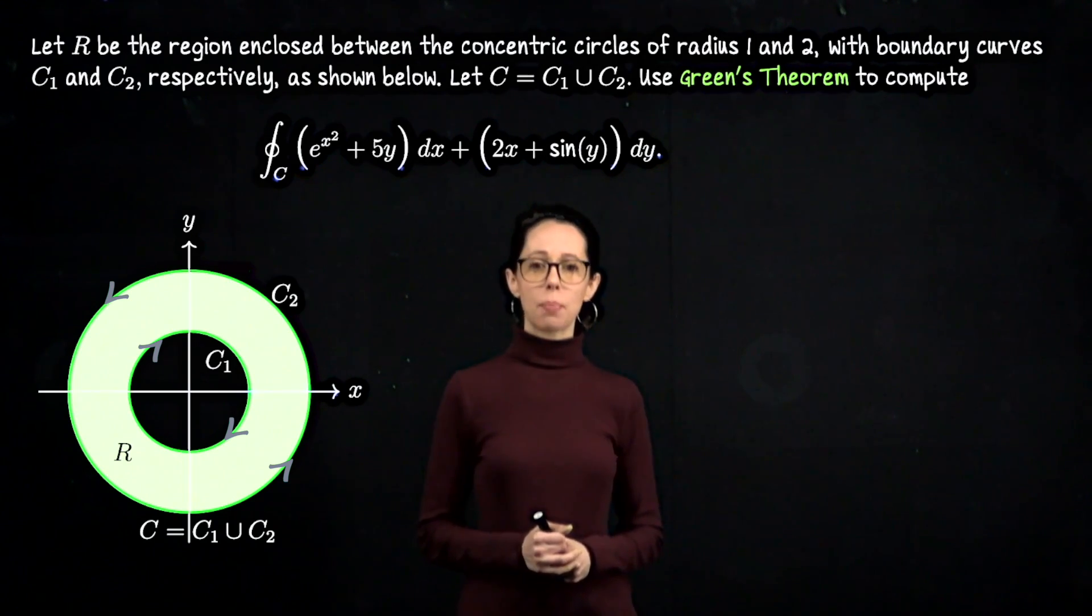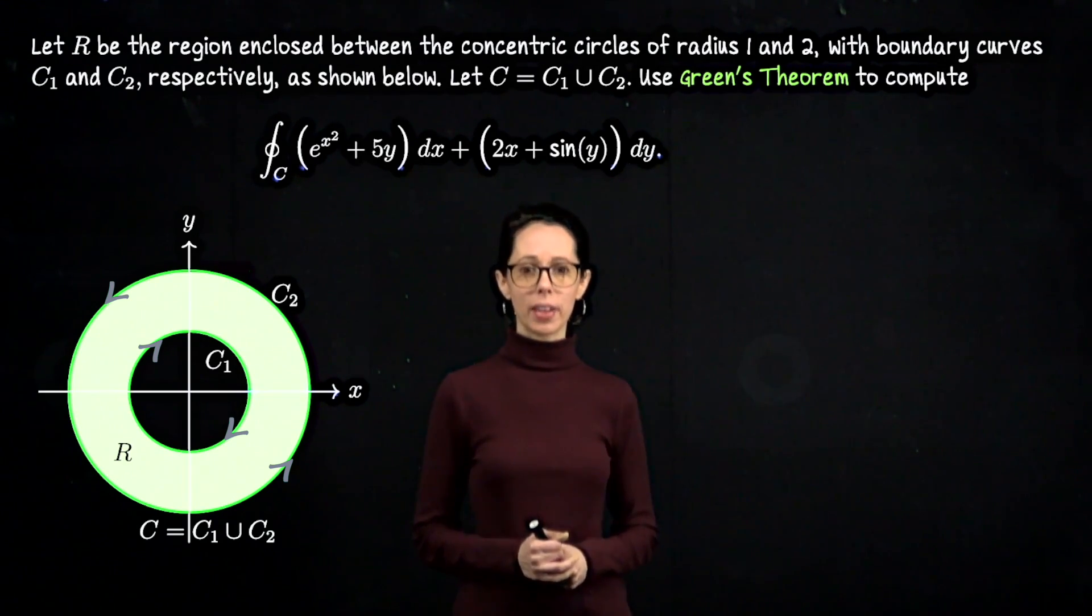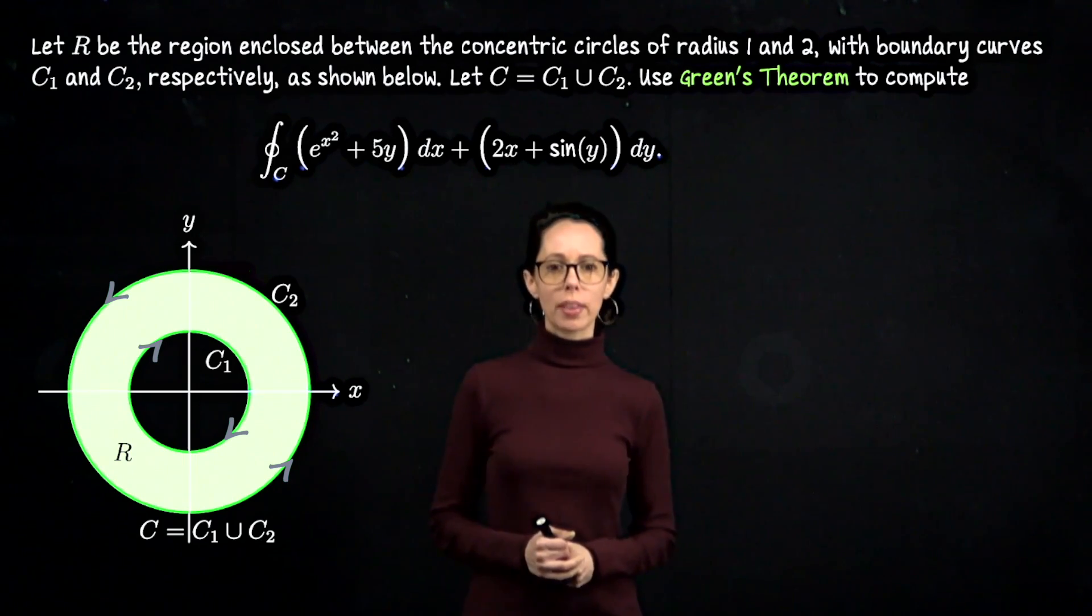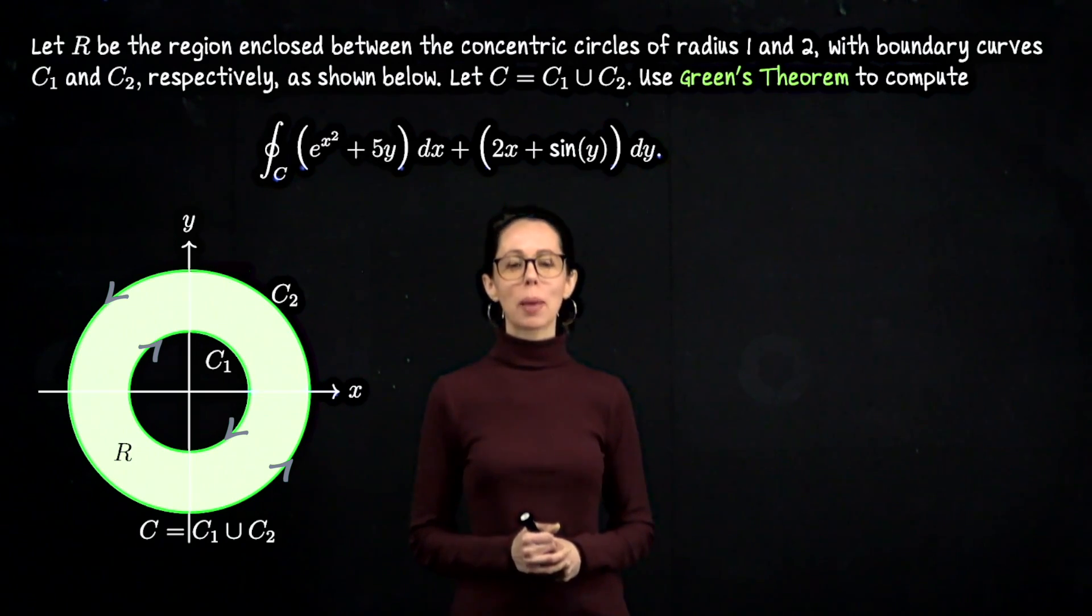In this video, we are going to do an example of using Green's theorem to compute a circulation integral for a vector field. Let's consider the region R, which is enclosed between the circle of radius 1 and the circle of radius 2 in the xy plane.